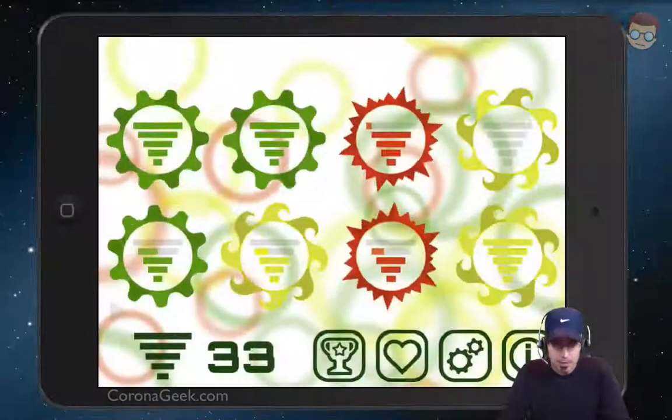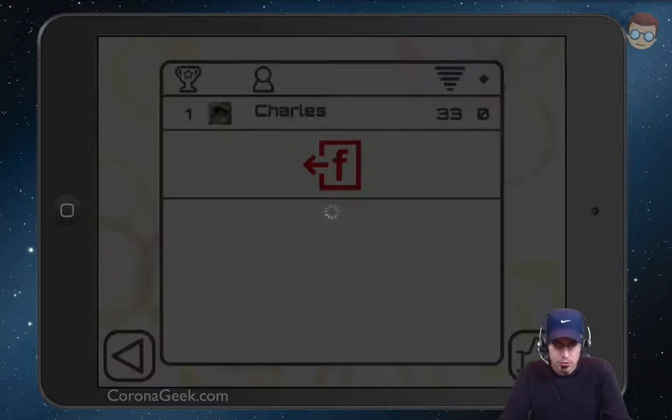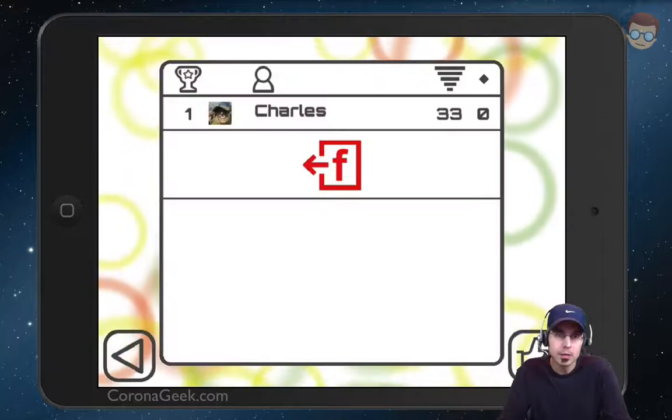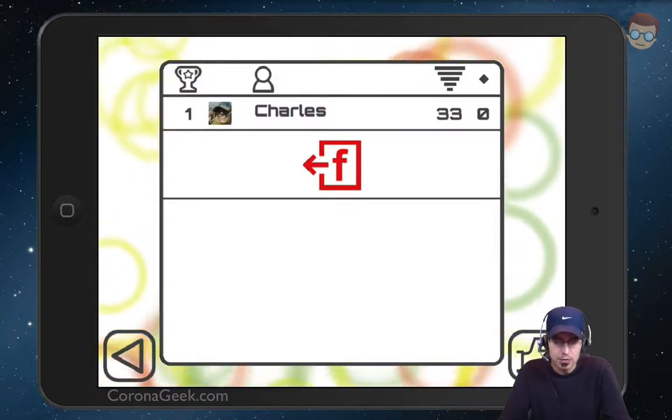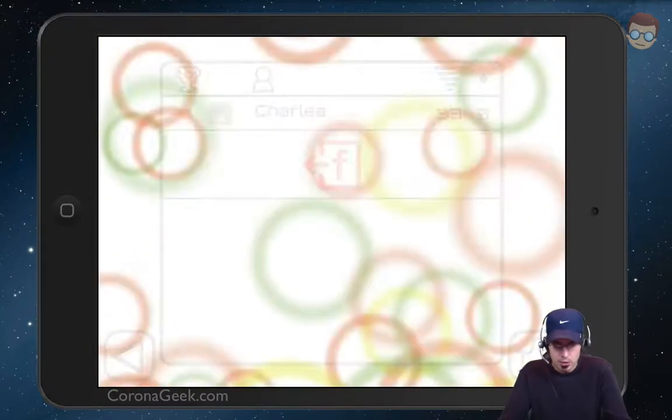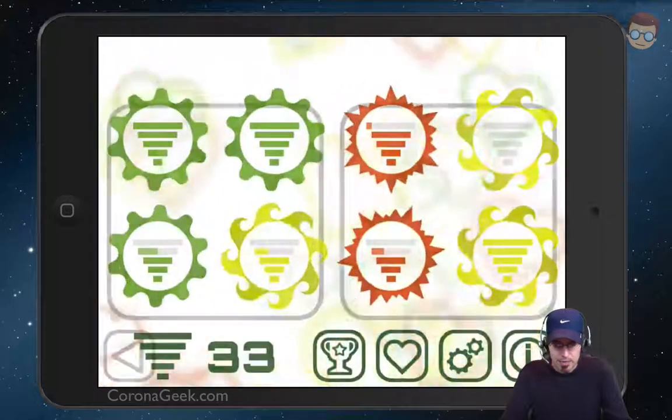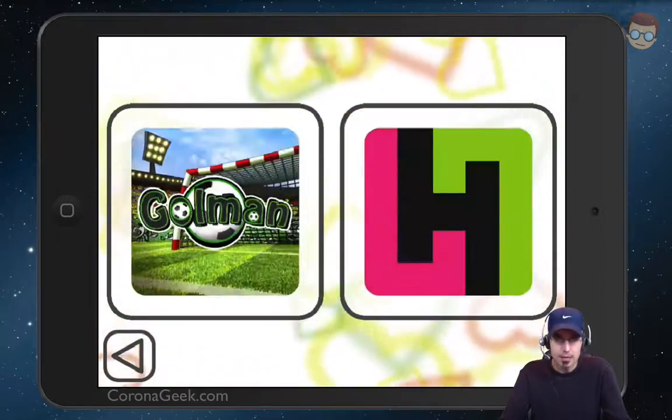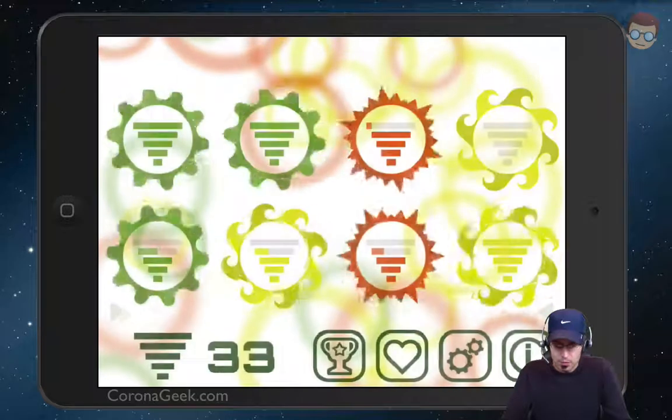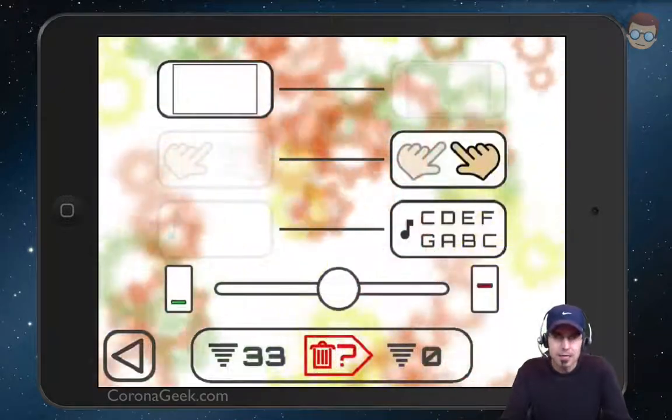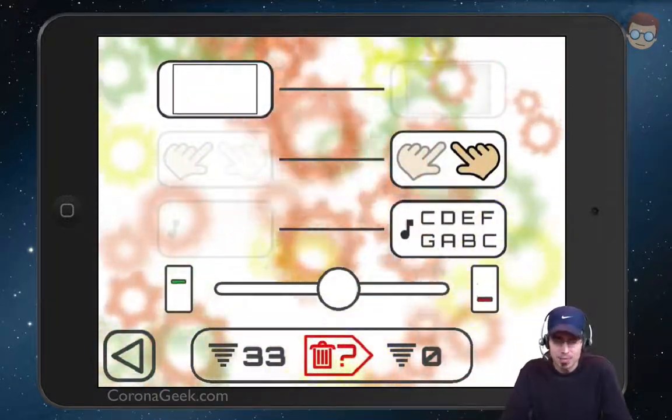Some of the other features of the app are you can share your score. So if you tap on the winner's cup there on the screen, you can share your score on Facebook. You can see some of the related apps that they recommend inside of Finger Hula. And then if you want, you can tap on the settings. Now the settings for this game are just as intuitive as the game itself.